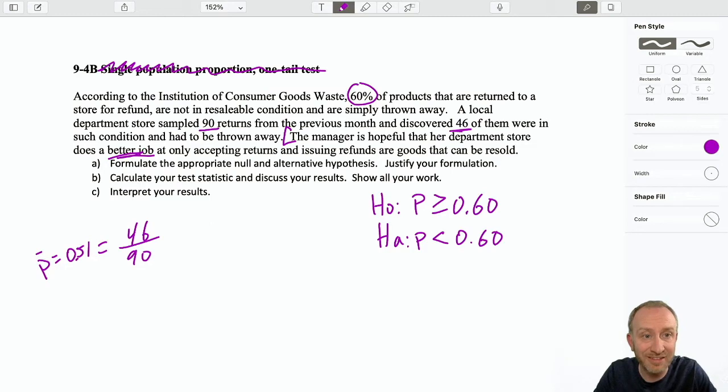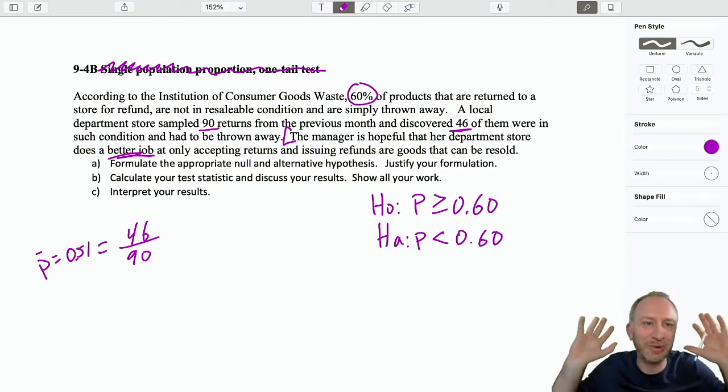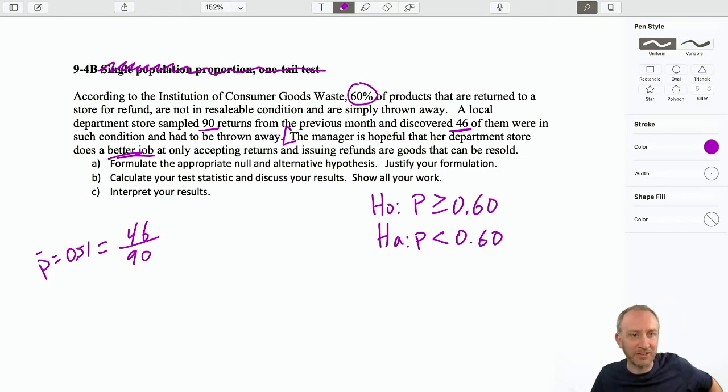So here's how we formulate our test. If the evidence supports the null hypothesis, we're no better than 60% going in the trash. If the evidence supports the alternative hypothesis, well now I can say, I the manager, oh I'm so happy we're throwing away less than 60% of the goods that are being returned. We can do this test at whatever level of significance that we want. Reasonably speaking, when in doubt, I choose 0.05.